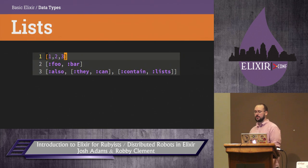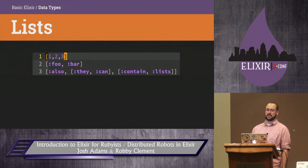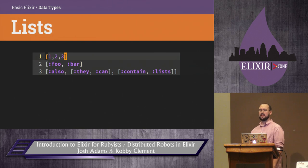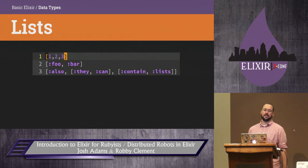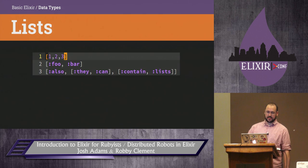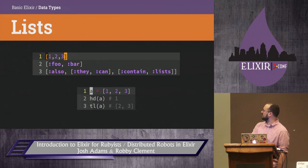Lists look like arrays in other languages, although they're not arrays. Writing a list is easy — you just put stuff in square brackets. Due to the way they're implemented as linked lists, the easiest thing to do is get the tail and the head. You can use the hd and tl functions to access the head and the tail.